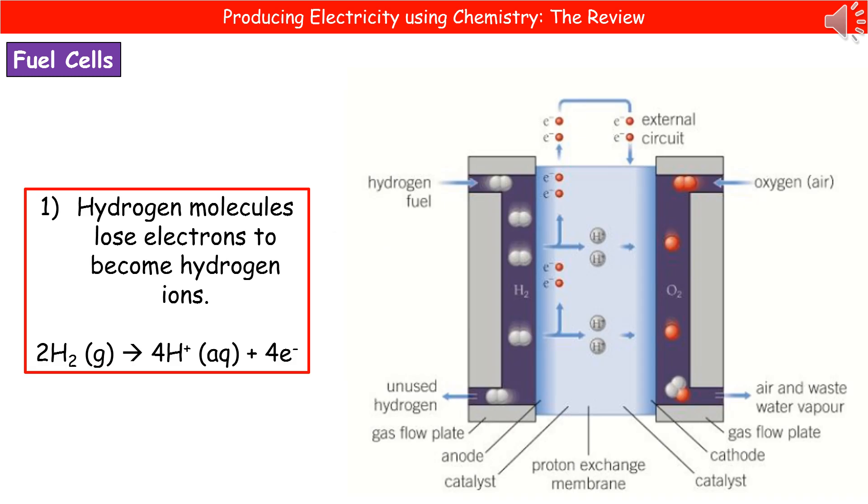On the right hand side I've given you a diagram of one of these hydrogen oxygen fuel cells. On the left hand side you can see the hydrogen fuel coming in and on the right hand side we've got the oxygen. These are separated into the two halves by a proton exchange membrane which runs down the centre of the cell. The first thing that's going to happen on the left hand side is that the hydrogen molecules will lose electrons to form hydrogen ions.